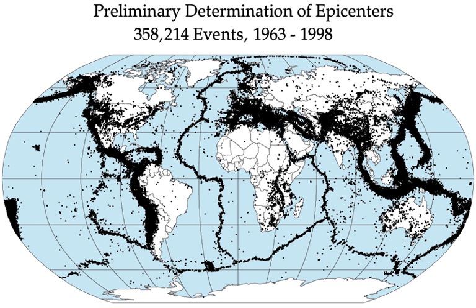Earthquake prediction is a branch of the science of seismology concerned with the specification of the time, location, and magnitude of future earthquakes within stated limits. Many methods have been developed for predicting the time and place in which earthquakes will occur. Despite considerable research efforts by seismologists, scientifically reproducible predictions cannot yet be made to a specific day or month.